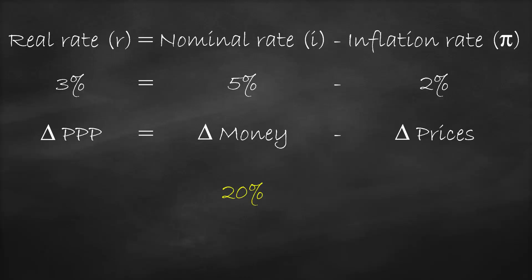Now consider a country where the nominal rate is twenty percent but the inflation rate is forty-five percent. Our real rate would be negative twenty-five percent. This means that if you put a deposit in a bank for one year, because inflation is bigger than the nominal rate, you will be worse off — your purchasing power will be lower by twenty-five percent, meaning you can buy twenty-five percent fewer goods and services. That's why the nominal rate is always positive, while the real rate can be positive, negative, or zero.